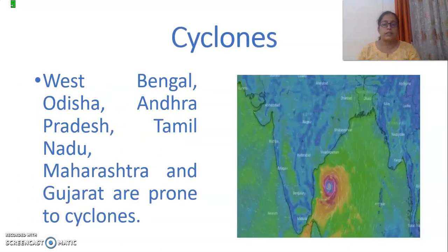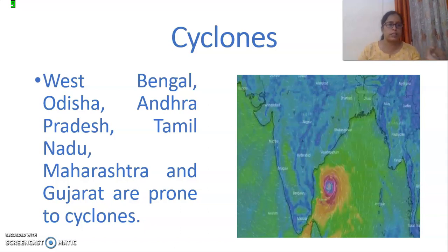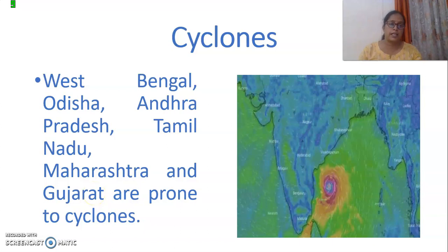Cyclone-prone areas are generally the coastal areas of India like West Bengal, Andhra Pradesh, Tamil Nadu, Maharashtra, etc.